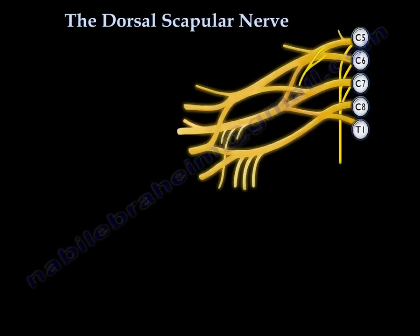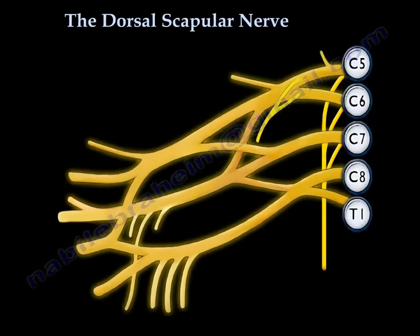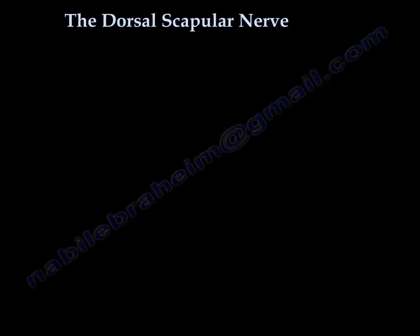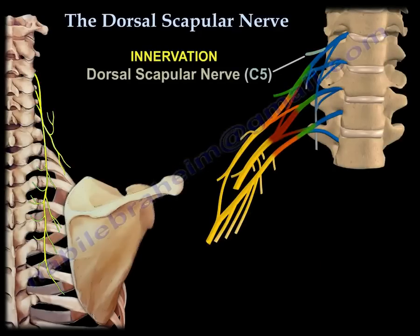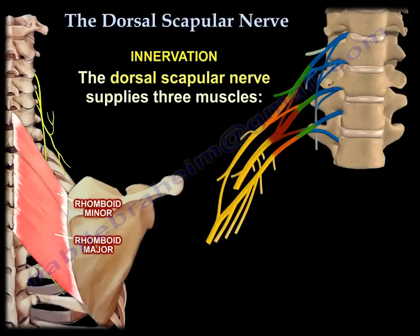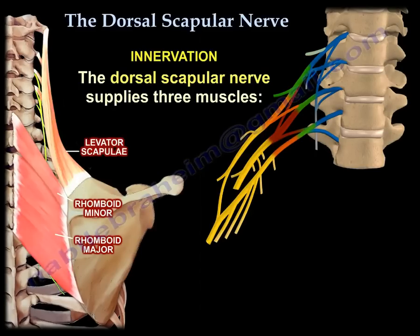The dorsal scapular nerve arises from the C5 nerve root. It innervates the rhomboids major and minor muscles, and also innervates the levator scapulae.